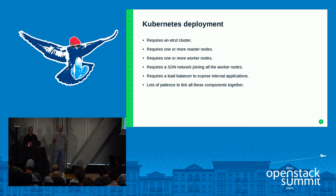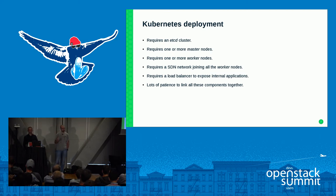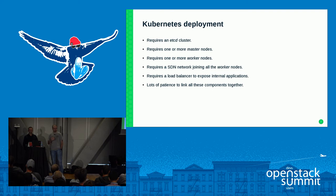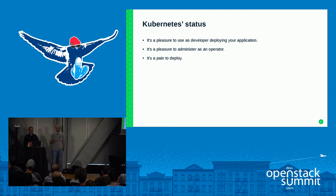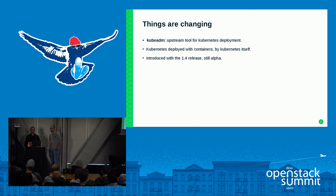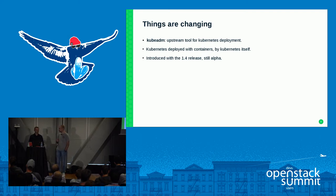How is Kubernetes deployed and what does it require? It requires an etcd cluster, one or more worker nodes, one or more master nodes, a software-defined network linking all containers together, and a load balancer to handle ingress network traffic. Plus, you will need a lot of work to bring everything together. Upstream is aware of this problem — it's a pleasure to use Kubernetes as a user, but it's a pain to deploy. Kubernetes upstream is currently working on a tool called kubeadm, currently in beta, introduced with version 1.4, that makes deployment easier. But it's not yet there, so in the meantime, what can we do?